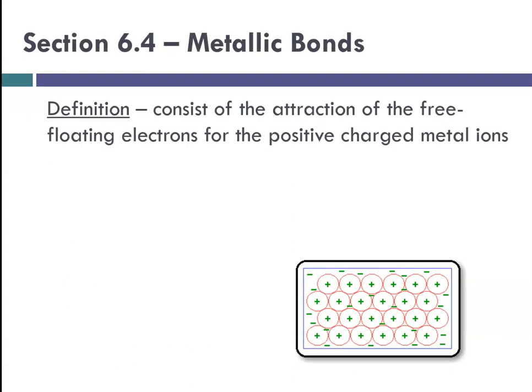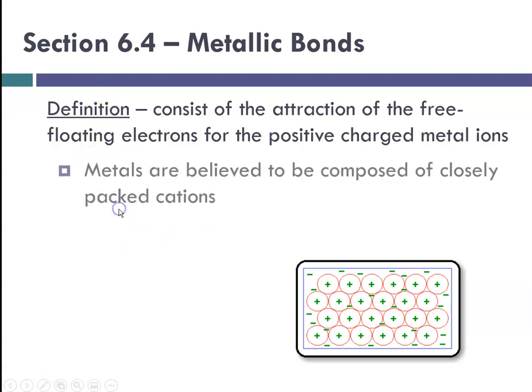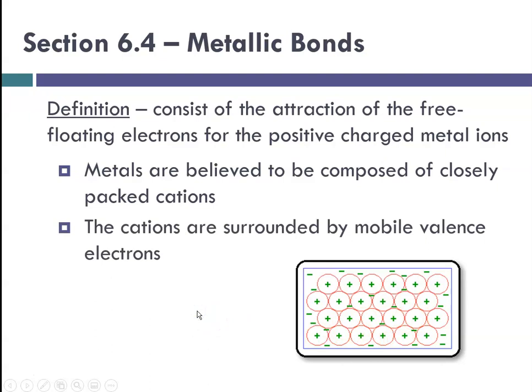And then we talk about metallic bonds, and down here is a picture of metallic bonding. The definition is it consists of the attraction of free-floating electrons that are surrounding positively charged metal ions. Metallic bonds are what occur in metals, and they are believed to be composed of closely packed cations, so that's these little pluses here, surrounded by a sea of mobile valence electrons.